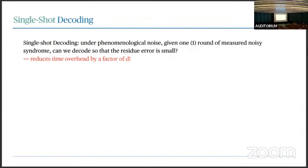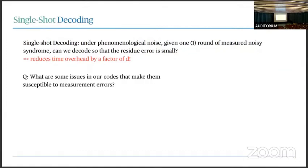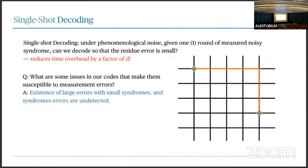If single shot decoding is possible, it would reduce the quantum time overhead of decoding by a factor of d. This is very motivated from a practical standpoint: the more rounds of syndrome extraction circuits you need, the more errors and noise accumulate. As we saw with the toric code, this doesn't work for many codes — you can't just give one round of noisy syndrome information and expect to work magic. What are the fundamental barriers for the toric code or other codes from being single shot?